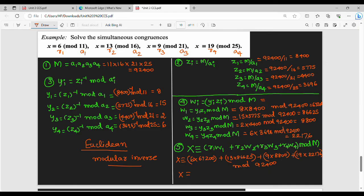So if you simplify the answer, x is congruent to 2,029,869 mod 92,400. If you divide the remainder, you will have to divide. So x is 89,469.